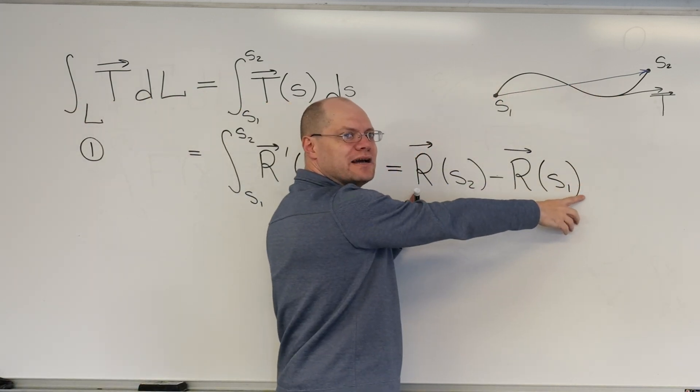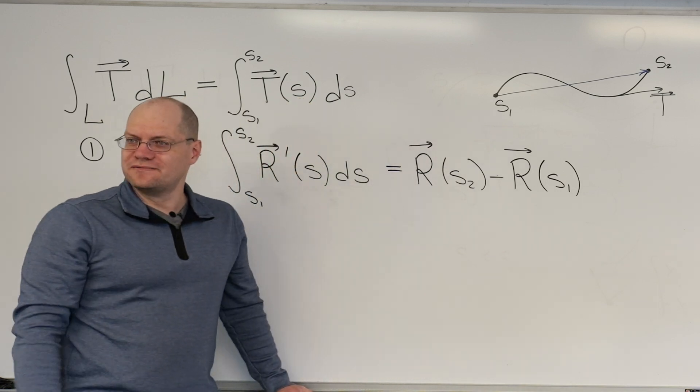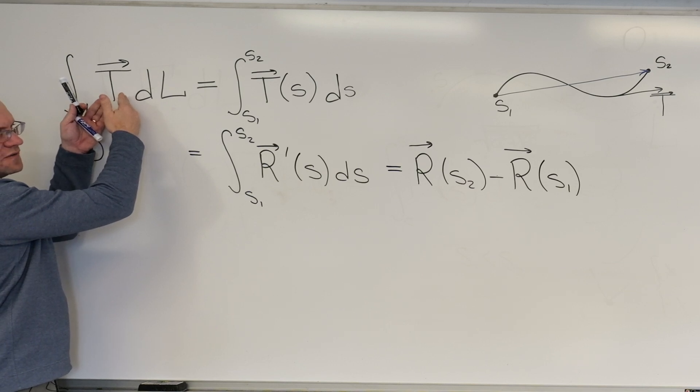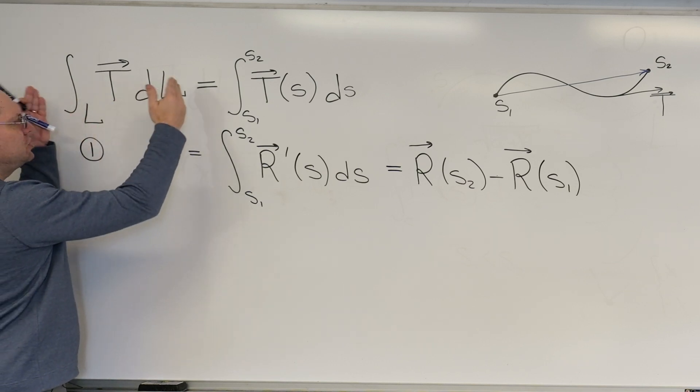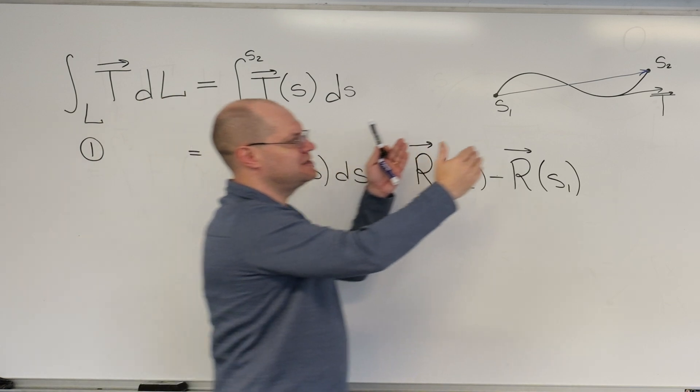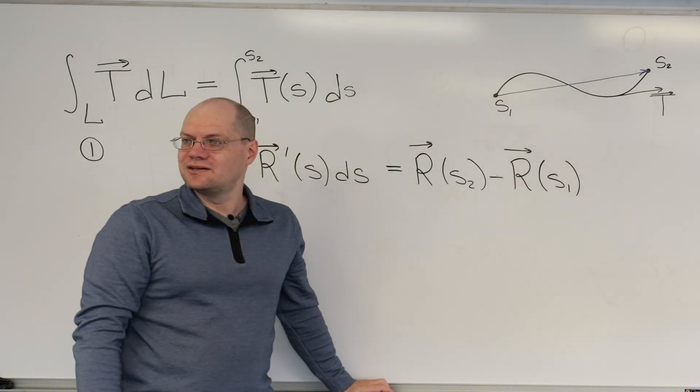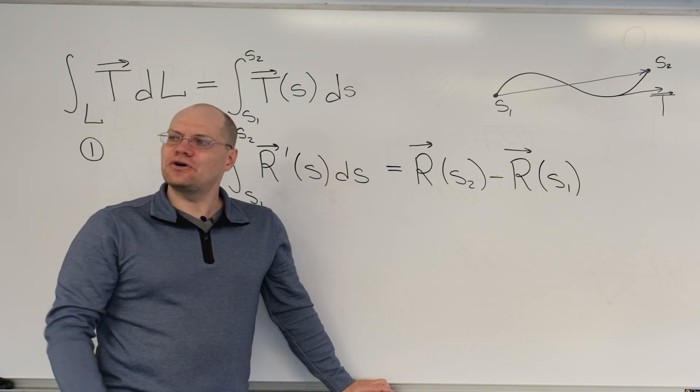That's our first beauty, is that this integral equals this vector. I don't even need to write it this way. I think words work much better. Because this is an expression that says the total amount of T along the curve. Words are better. The total amount of T unit tangent along the curve is this vector connecting the starting point with the ending point.